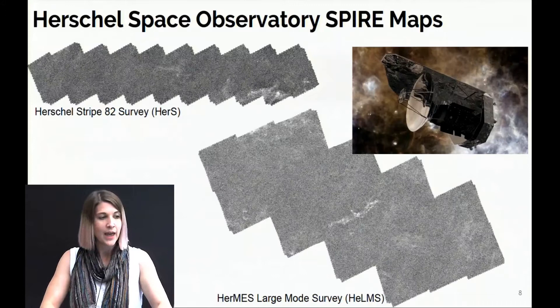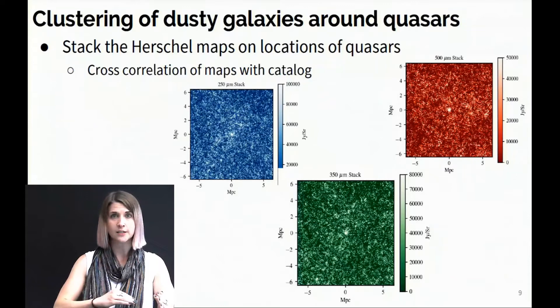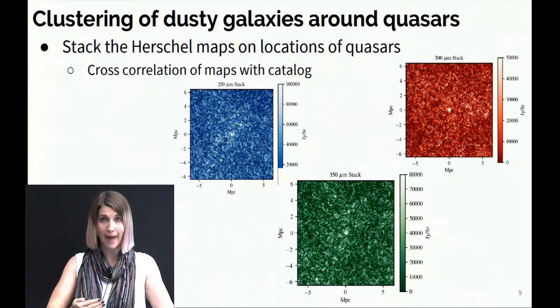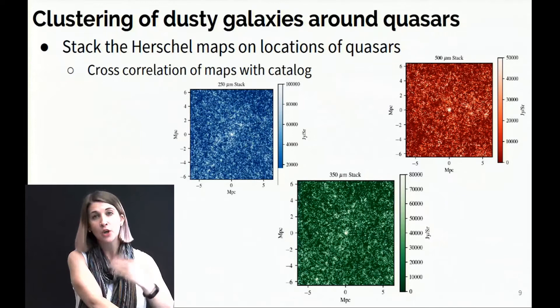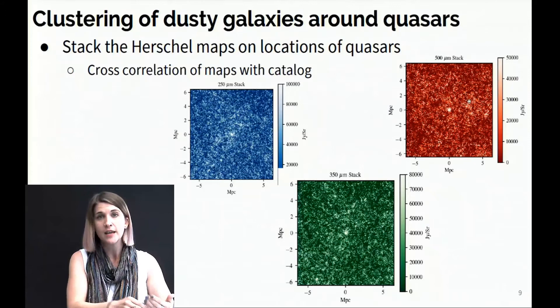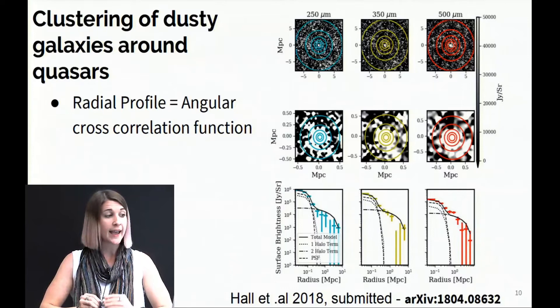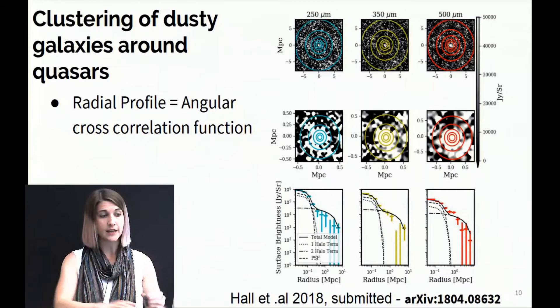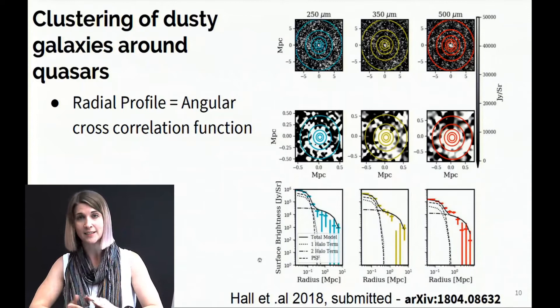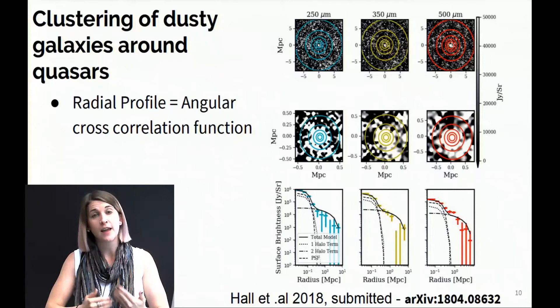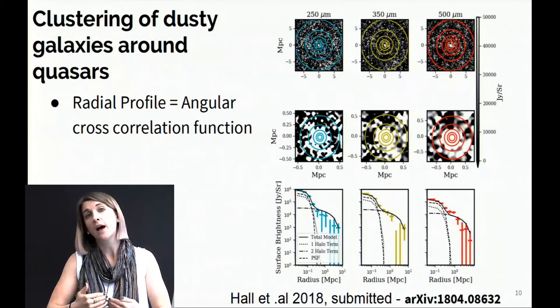What we're looking at is the clustering of dusty galaxies around quasars, and we're doing this using a method called stacking. We are stacking the Herschel maps on the locations of the quasars, which is equivalent to a cross-correlation of the Herschel maps with the quasar catalog. I'm showing an example of what the stacks look like at 250, 350, and 500 microns in the infrared data. We then use these stacked maps to generate angular cross-correlation functions by binning the maps radially into surface brightness — showing the angular cross-correlation function in units of surface brightness of quasars and dusty star-forming galaxies making up the infrared emission in the Herschel maps.